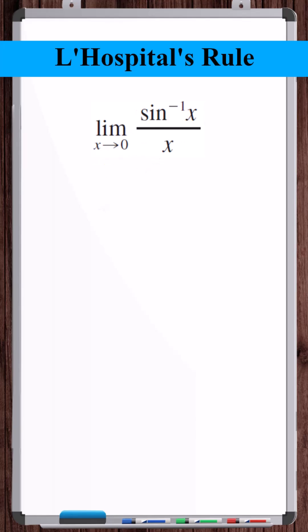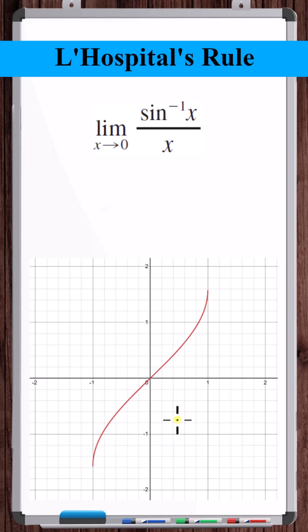If we look at the graph of inverse sine of x, remember in order to create an inverse of sine of x, the domain of sine of x is restricted to minus pi over 2 to pi over 2. So this is the entire graph of the inverse sine of x. And we can see as x approaches 0, inverse sine of x approaches 0.